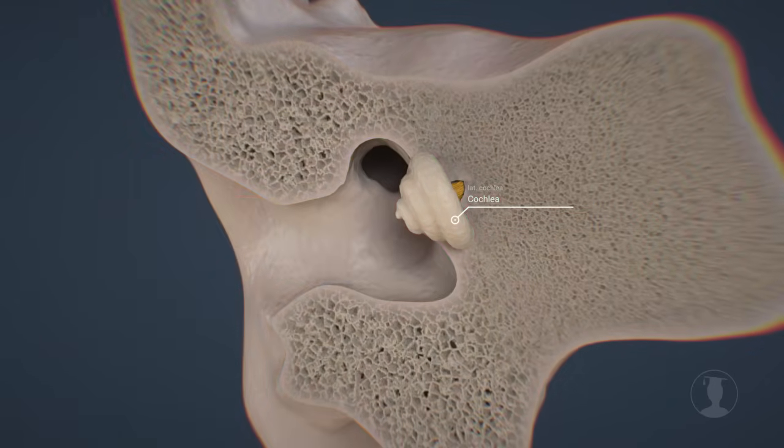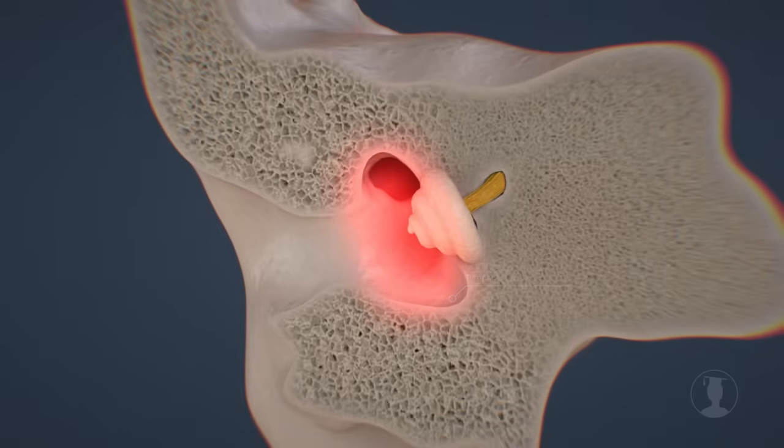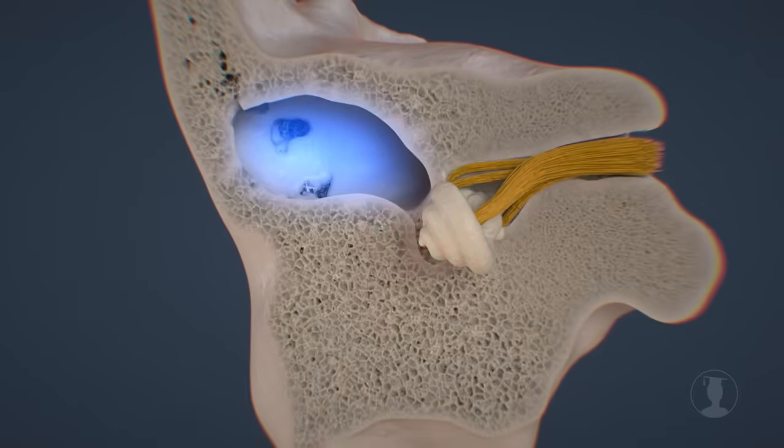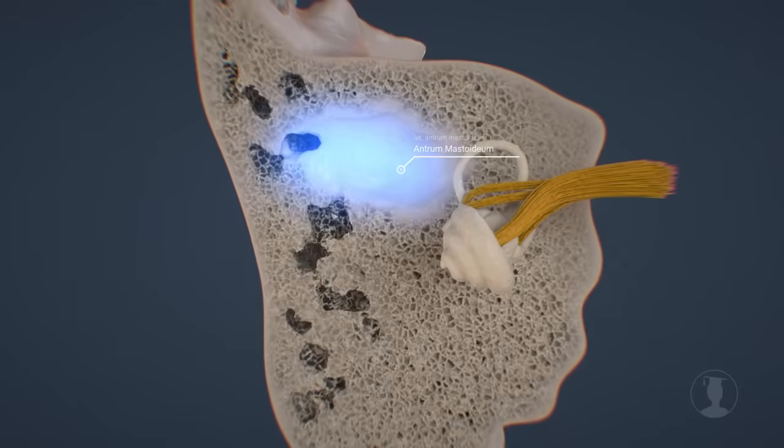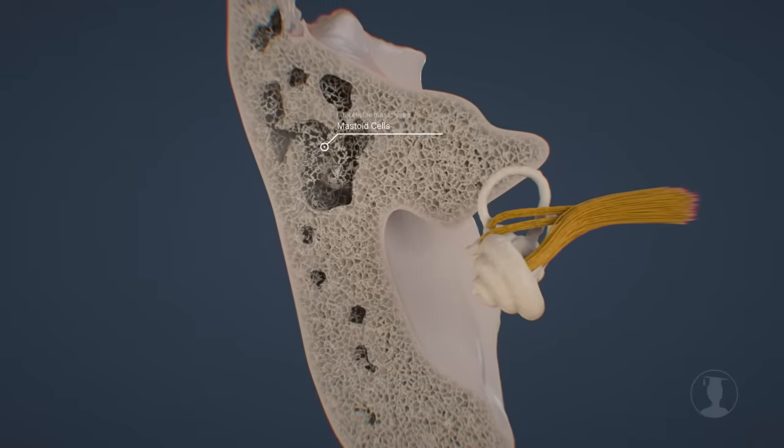The tympanic cavity, which belongs to the middle ear, is connected via an opening to another cavity called the antrum mastoideum. This cavity is in turn connected to other cavities, which are large in some people and small in others, or not present at all.